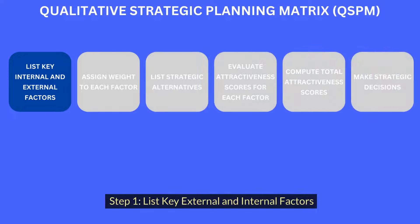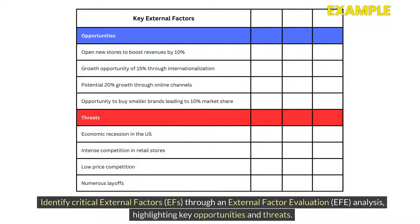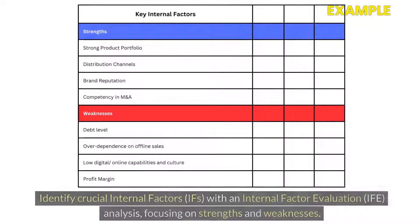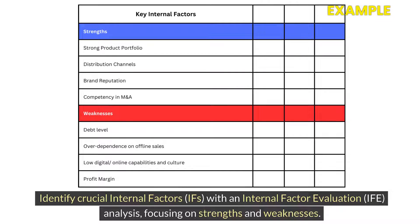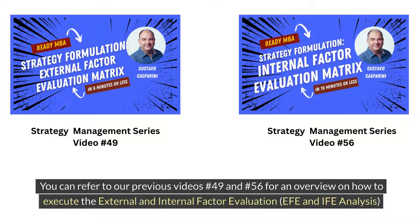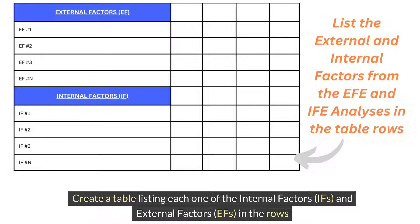Step 1: List Key External and Internal Factors. Identify critical external factors (EFs) through an External Factor Evaluation (EFE) analysis, highlighting key opportunities and threats. Identify crucial internal factors (IFs) with an Internal Factor Evaluation (IFE) analysis, focusing on strengths and weaknesses. You can refer to our previous videos — number 49 and number 56 — for an overview on how to execute the EFE and IFE analyses. Create a table listing each one of the internal factors (IFs) and external factors (EFs) in the rows.